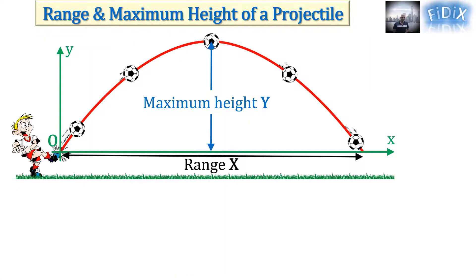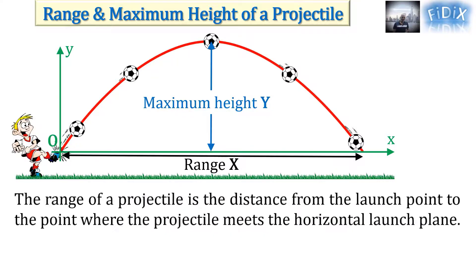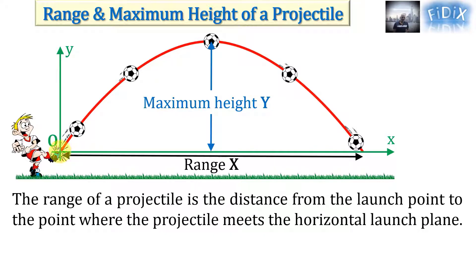In this video we will talk about the range and maximum height of a projectile. It is recommended to watch my previous video on projectiles for the derivation of some of the equations used in this video. As we can see in the figure, the range of a projectile is the distance from the launch point to the point where the projectile meets the horizontal launch plane.